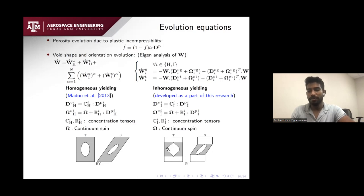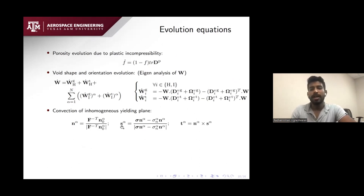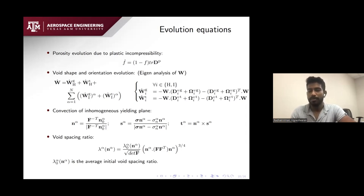For homogeneous yielding, plastic flow is assumed diffused in the matrix, whereas for inhomogeneous yielding, plastic flow is assumed localized in the ligament — the void tries to bulge out and coalesce with the neighbor in coalescence in tension, and tries to rotate and extend to coalesce in shear. The third set of equations governs the convection of the inhomogeneous yielding plane, where n is the normal to the highway plane and rotates opposite to how the material plane evolves based on kinematics of continuum mechanics. The void spacing ratio evolution is defined based on the deformation gradient.